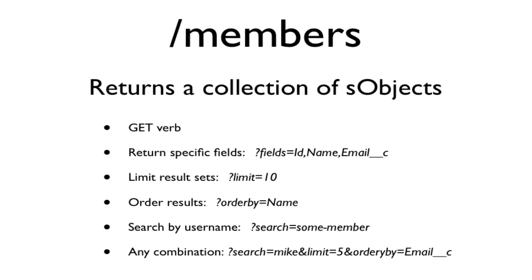It's going to have features where they can return, based on query string parameters, a bunch of different things. They can specify certain fields to be returned, have a limit of records to return, order the results by a certain field, and there's also a simple search. You can search by keyword for a username, and of course support any combination — for example, search for Mike where limit equals five records returned and order the results by email.